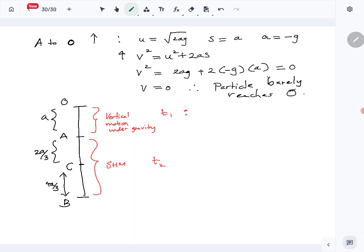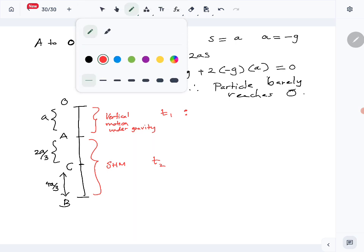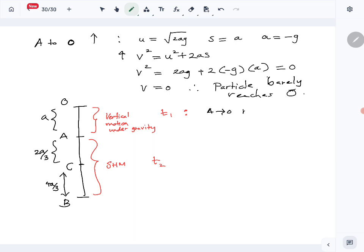We know the velocity at A, velocity at A is root 2ag. So we'll find t₁ first. You are considering A to O motion. For A to O motion we know displacement a, acceleration minus g, and the initial speed in that section is root 2ag. We want to find time t and we also showed velocity at O is 0. So we will use v = u + at to find time. v is 0, u is root 2ag, minus gt₁. Then t₁ is root 2ag over g or root 2a over g.